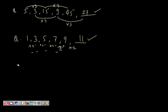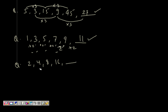Let's do this problem: 2, 4, 8, 16 — what could be the next? Now if you see over here, this is a multiplication of numbers. 2 to 4, 4 to 8, 8 into 2 is 16, 16 into 2 gives you 32. This solves the problem.